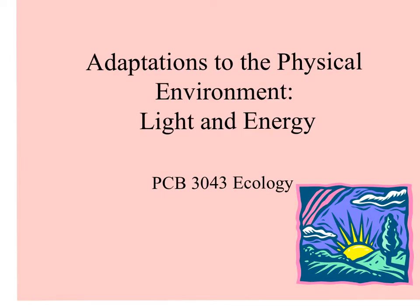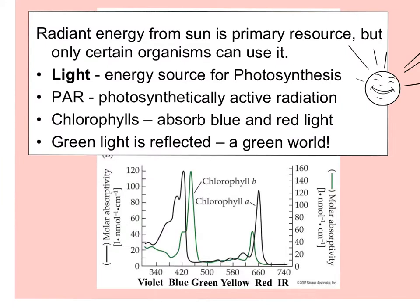Let's talk about light and the energy that results from organisms using light. The sun's energy is a primary resource, but only primary producers can use it. It's the energy source for photosynthesis, and we refer to certain wavelengths of light used for photosynthesis as photosynthetically active radiation, or PAR.